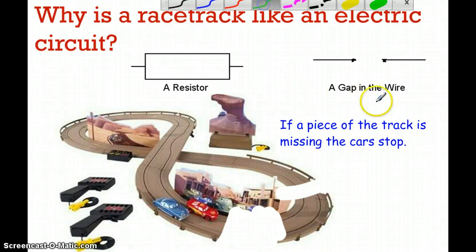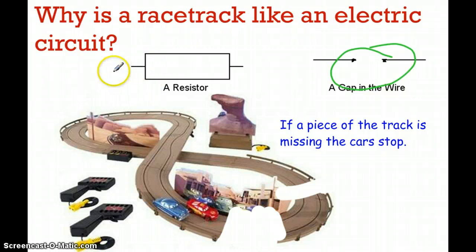Much like a gap in the wire. Or sometimes there can be a resistor. A resistor is something that slows down the path of electricity. A light bulb would be an example of a resistor. Something that slows down the path of the electrons but still keeps it going.